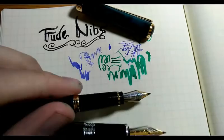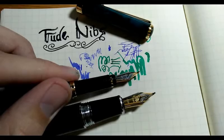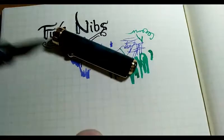So this is, these are both Jin Hao nibs that I purchased online and then just fit into the pen. So you can see that larger one, you can even get more line thickness. You can see it's thinner there and down to very thick strokes.